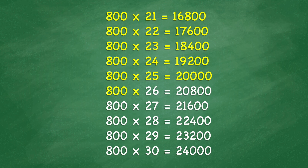800 times 26 equals 20,800. 800 times 27 equals 21,600. 800 times 28 equals 22,400.